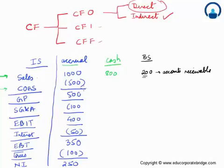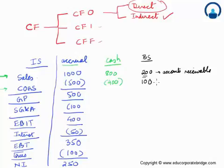Now let's look at COGS (cost of goods sold), which was 500. Let's assume that out of this 500, only 400 was actually paid during the year. The remaining 100 was an expense not yet fully paid, so it is classified as a liability on the balance sheet — specifically as accounts payable under current liabilities.